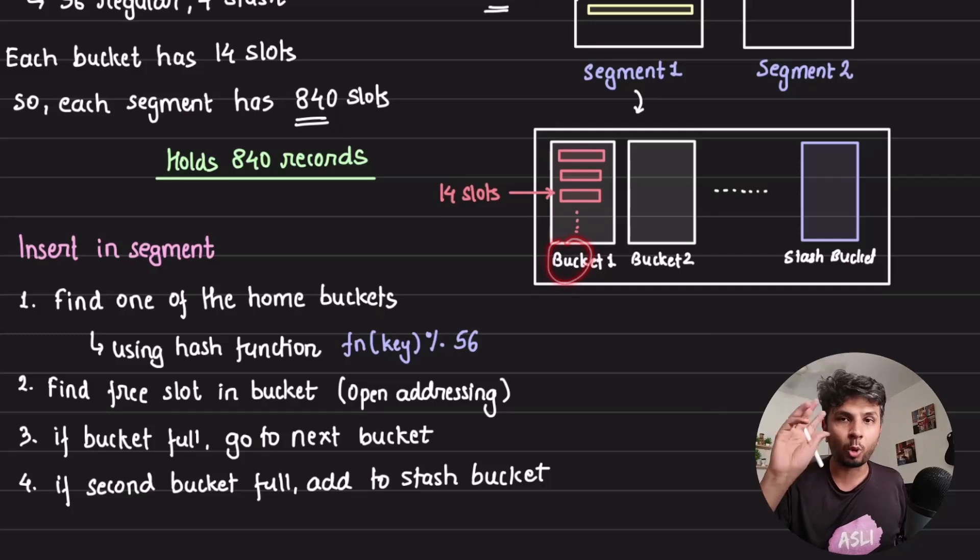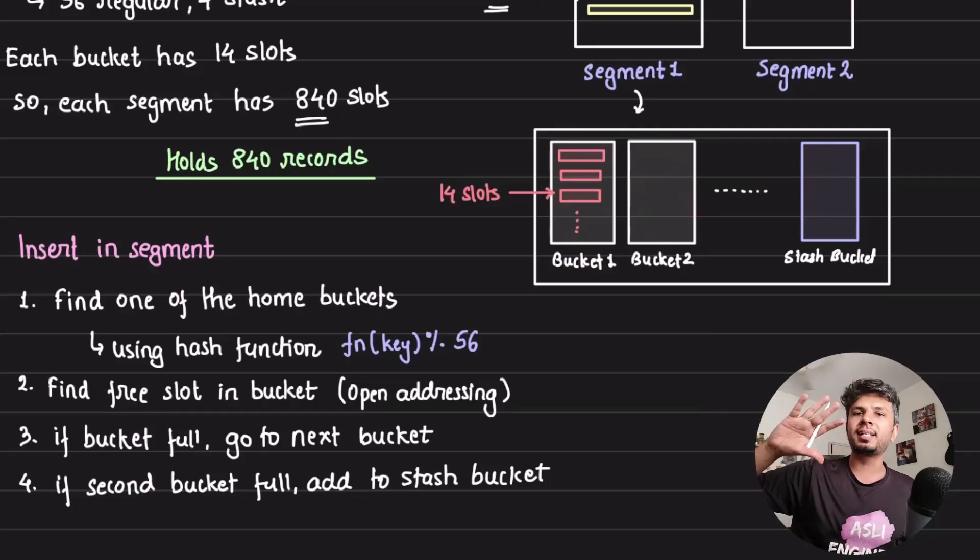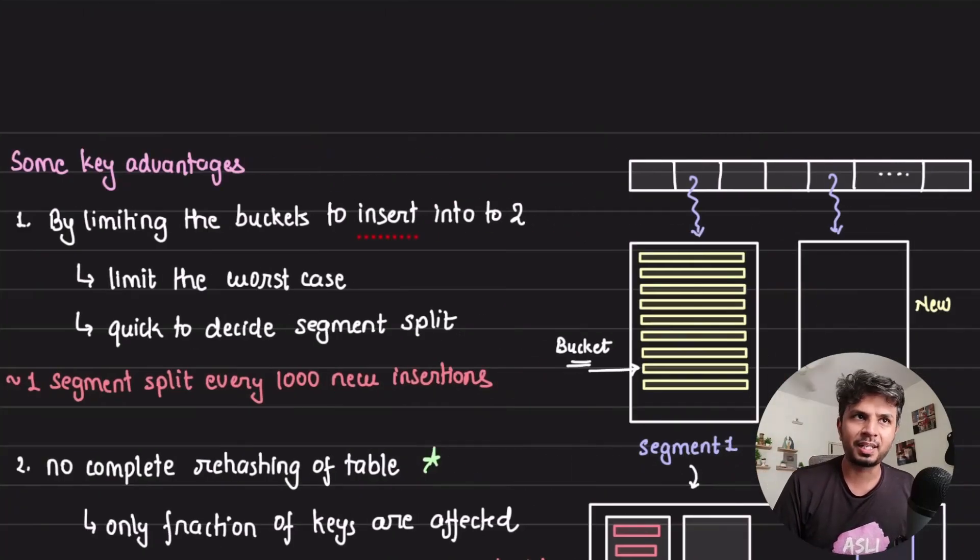Find the first available slot where I can fit in. If first bucket is filled, the home bucket is filled, I'll go to the next bucket. If the next bucket is also filled, I'll go to the stash bucket. And if stash bucket is filled, I'll say that insertion cannot happen. Please trigger the split of the segment. That's how the insertion works at the segment level.